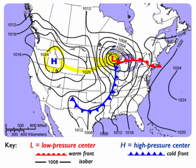So what we can see: we have a high here, so air is going to move away from that high. And then we have a low here, and so air is going to be moving in to that low.